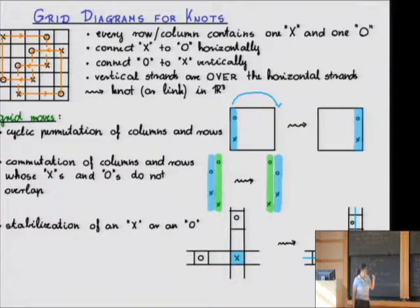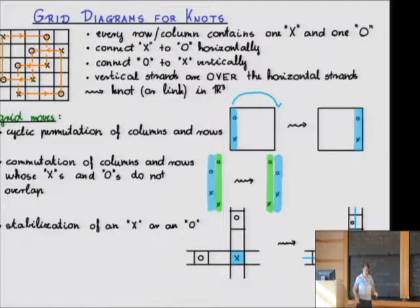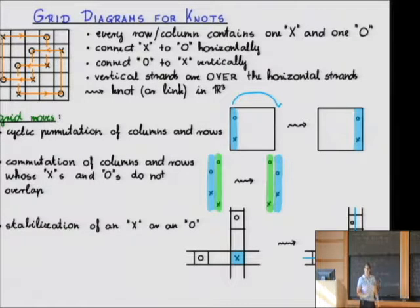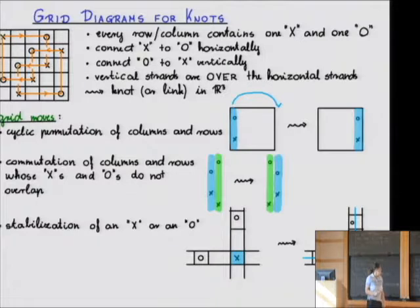If you have two columns or rows whose O's and X's are nested — meaning one of them is inside the other, rather than interleaved — then you can interchange those two columns or rows. This operation is called commutation.